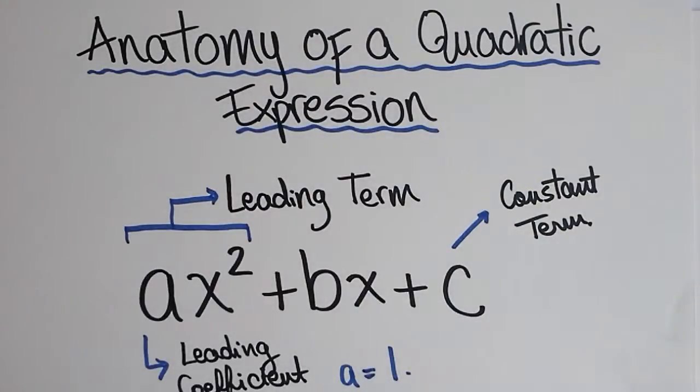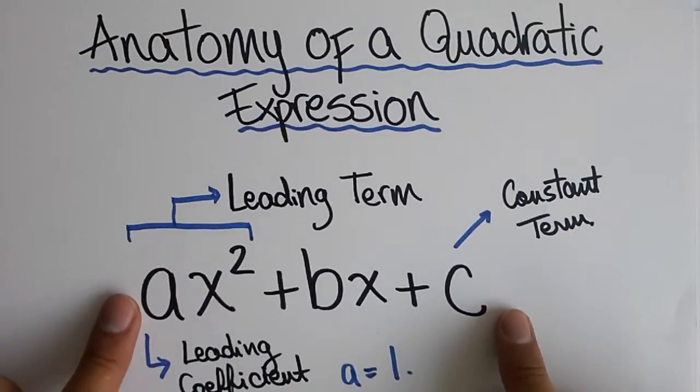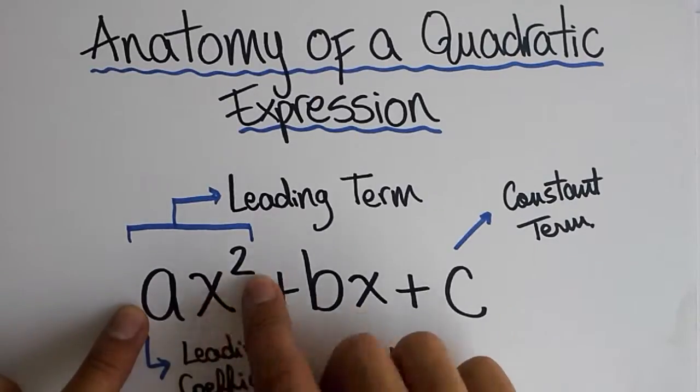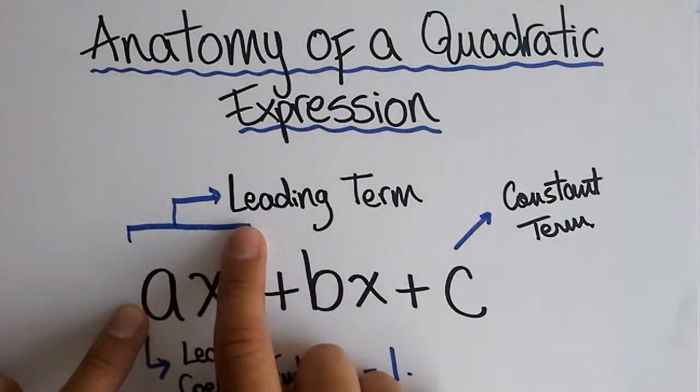To begin we should check out the anatomy of a quadratic expression. Pretty much any quadratic expression that we want to factor we will find it in this form: three terms, ax squared plus bx plus c. This first term, the one that has the x squared, we call it the leading term.